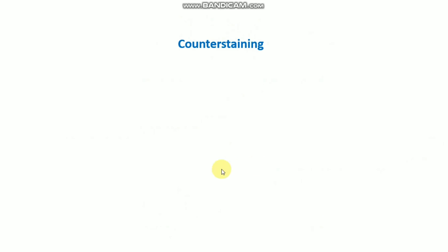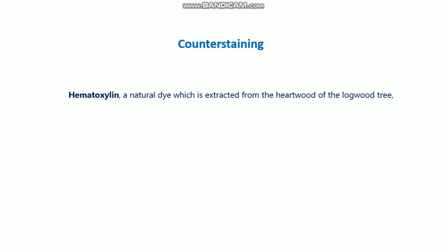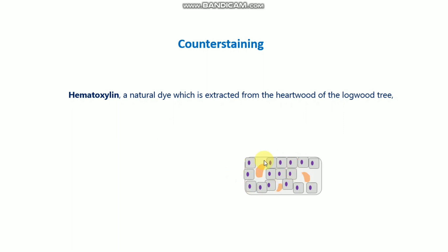Next is counter staining, which is the final step of the IC staining process. We usually use hematoxylin — a natural dye extracted from the hard root of the logwood tree. This staining agent normally stains the nucleus. As you can see in this picture, after the brown DAB color is formed, counter staining with hematoxylin stains the nucleus with a violet color, making it much easier to detect tumors in cancer tissues.